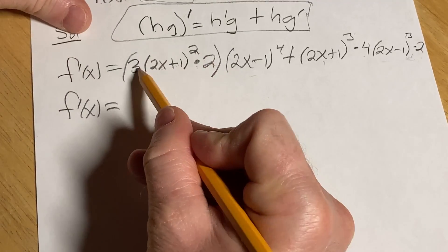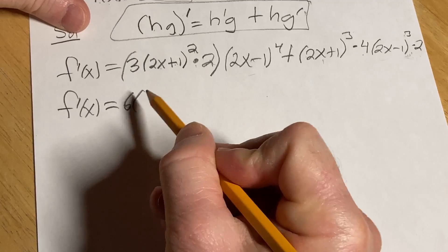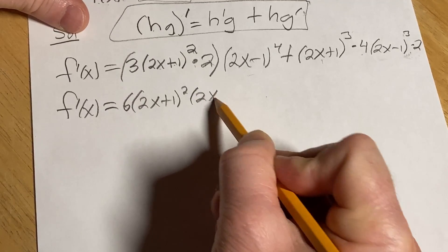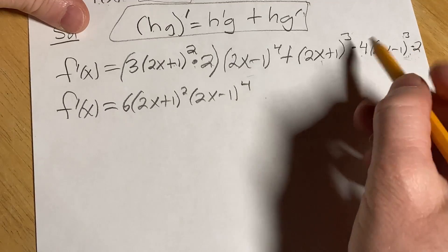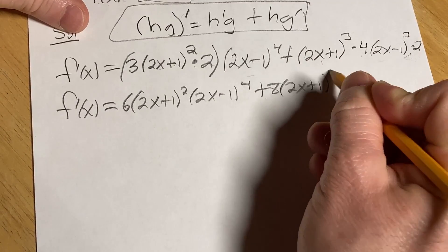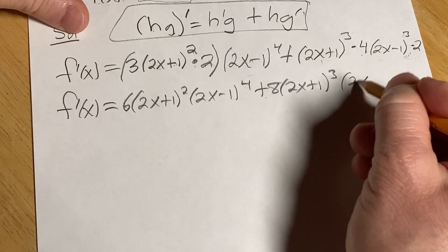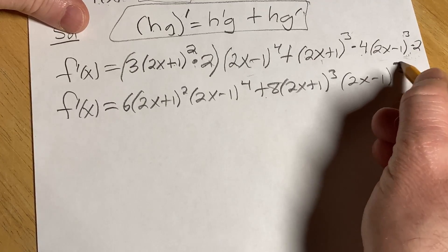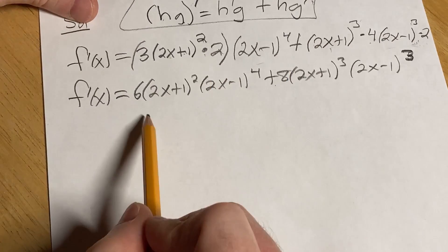So let's see here, 2 times 3 is 6. Let's do that. Then we have 2x plus 1 squared, 2x minus 1 to the fourth. And then here we have 2 times 4, which is 8. So you have 2x plus 1 cubed, 2x minus 1 cubed.